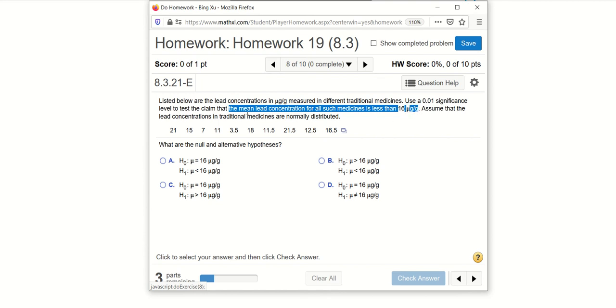So the population mean μ is less than 16. That will be the claim.